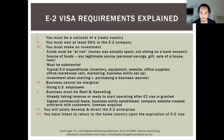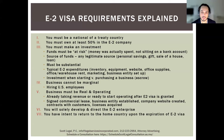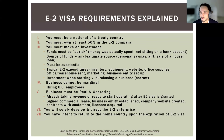The fourth requirement is that the business cannot be marginal. What we mean by marginal in the case of an E2 is that the business will have to support not only the E2 applicant and their family, but also US workers. So it cannot be just a one-man shop — it has to be a company capable of supporting US workers. We usually recommend having three to four employees at the end of a five-year run of the company, as shown in the business plan.